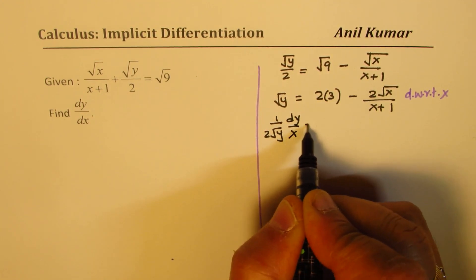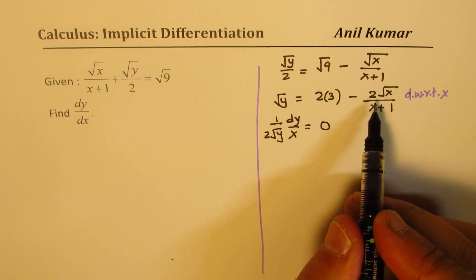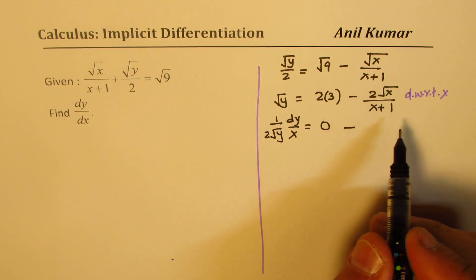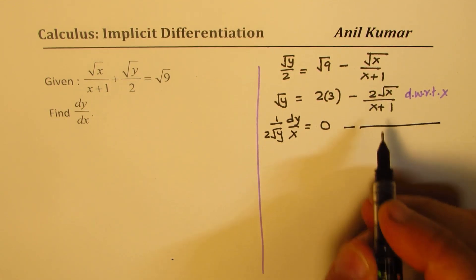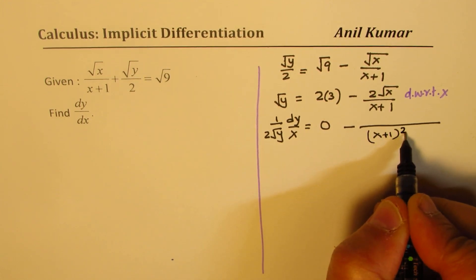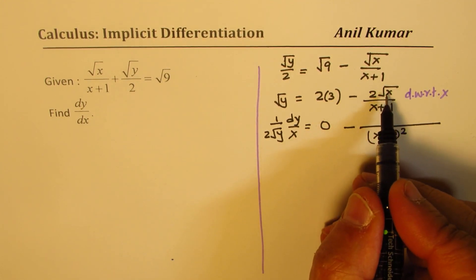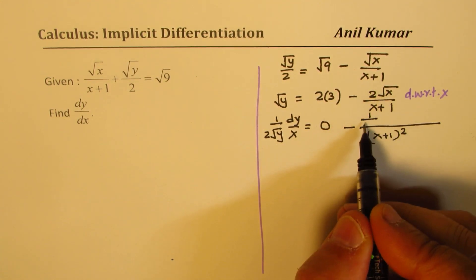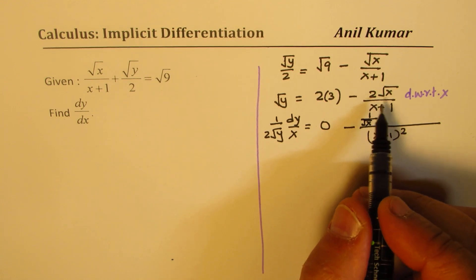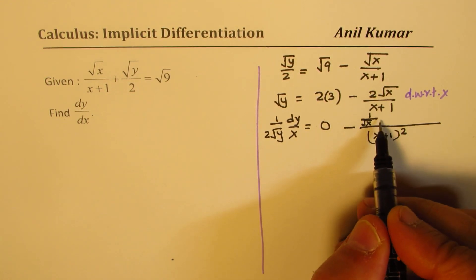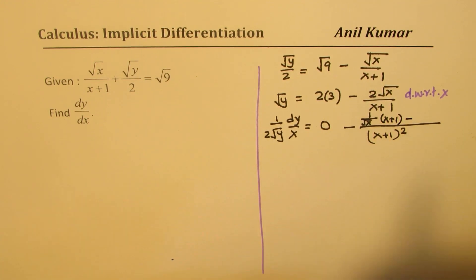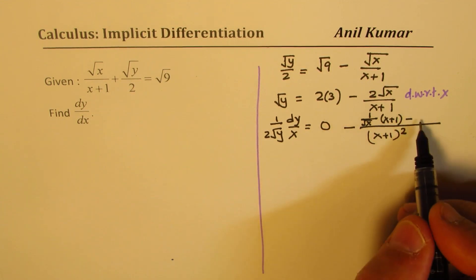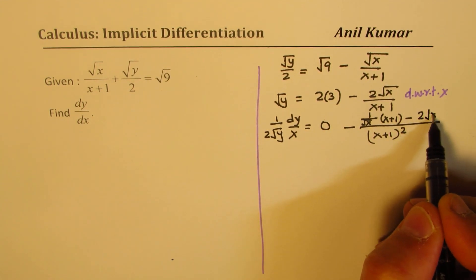The derivative of the constant term is 0, and here we get a negative; we'll have to apply the quotient rule. That gives us (x plus 1) squared times derivative of square root of x, which is 1 over 2 square root of x. This 2 and that 2 cancel, times (x plus 1), minus 2 square root x times derivative of (x plus 1) which is 1, giving 2 square root x.